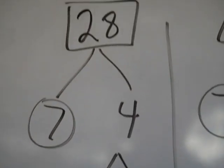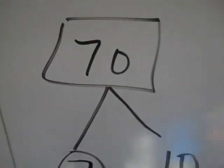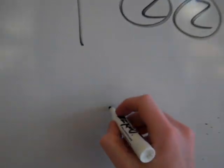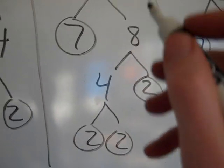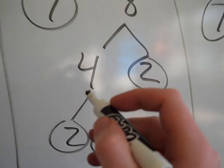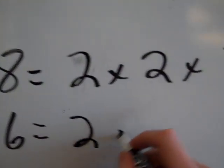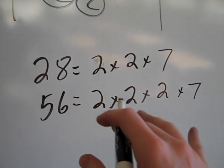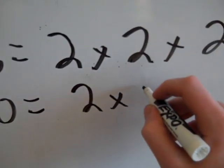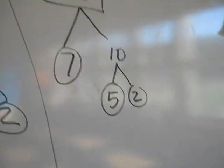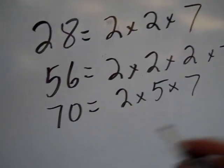One last example. Here I have the numbers 28, 56, and 70. I've done all of the factor trees for you. You can see 28 is a 7 and two 2's. So its prime factorization is 2 times 2 times 7. And then 56 has three 2's and then a 7. And then 70 has a 2, a 5, and a 7 — it's a factor ladder. So there are my three prime factorizations.